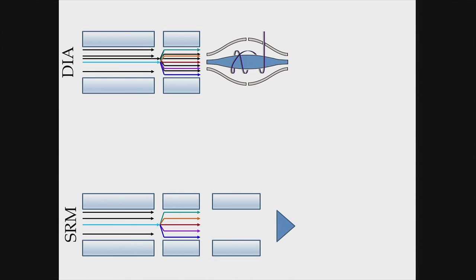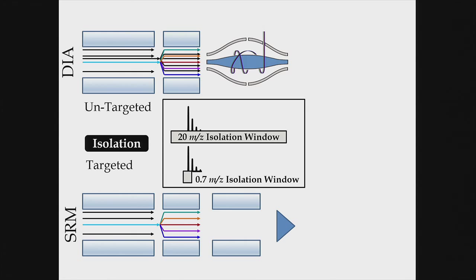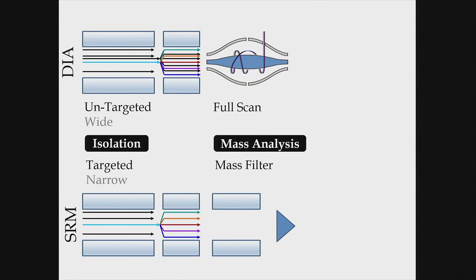Comparing instrumentation between SRM and DIA: in SRM we measure a targeted window centered on the precursor, whereas in DIA the precursor is not necessarily centered in the window. SRM uses a narrow isolation window; DIA has a wide isolation window. The mass analysis in SRM uses a mass filter — low resolution — whereas DIA uses full scan, high-resolution, accurate mass, most often on an Orbitrap.